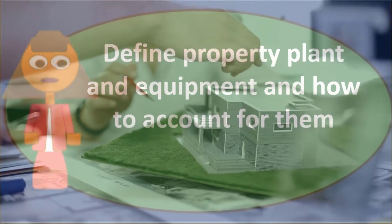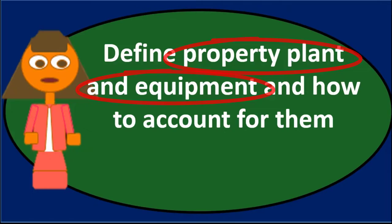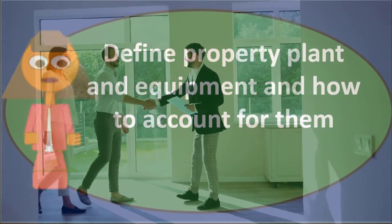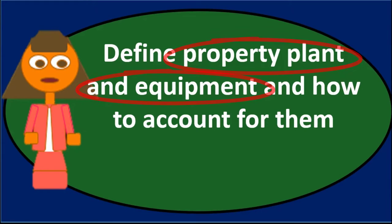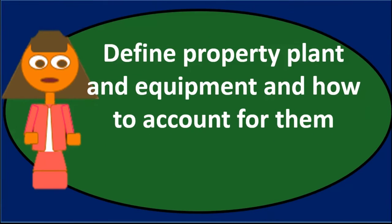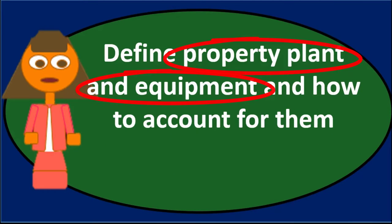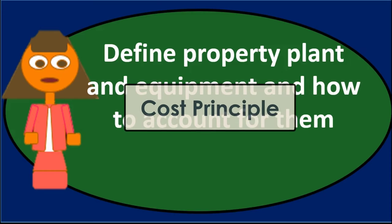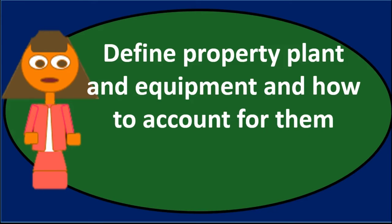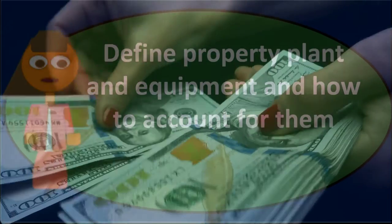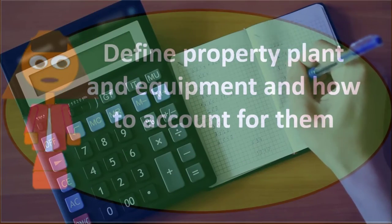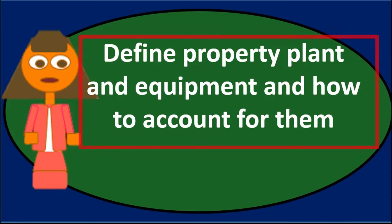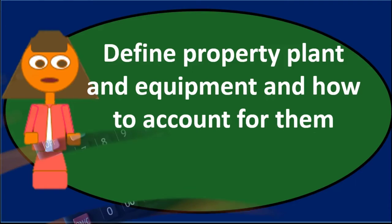A couple of issues arise when we determine property, plant and equipment. When we purchase it, we need to determine whether to record it as property, plant and equipment. If it's a tangible asset we're going to use over multiple time periods into the future, then we would capitalize it. When we put it on the books, we record it using the cost principle — at cost, what we paid for it. That includes financed purchases; if we took a loan out, we'd still put it on the books for the loan amount.